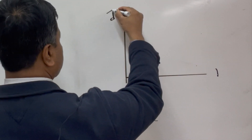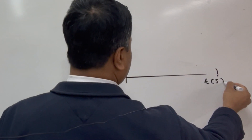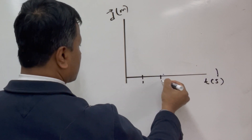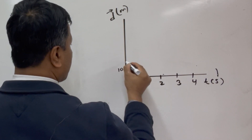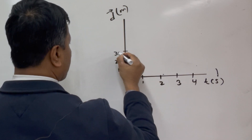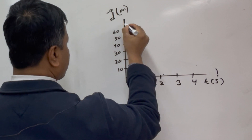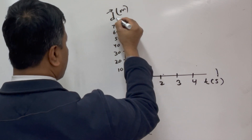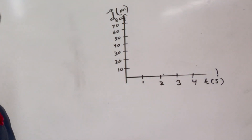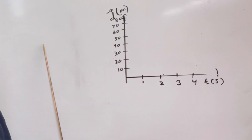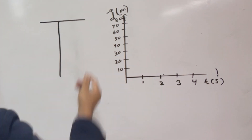So let's construct it. Displacement has to be in meters and the time has to be in seconds. We'll mark 4 seconds on the time axis: 1, 2, 3, 4. And on the displacement axis: 10, 20, 30, 40, 50, 60, 70, and 80. The graph must come from the table — no table, no graph.